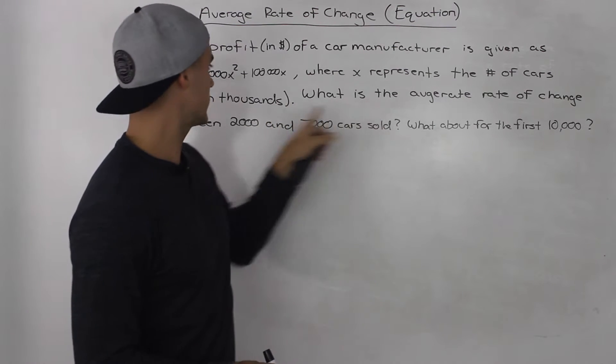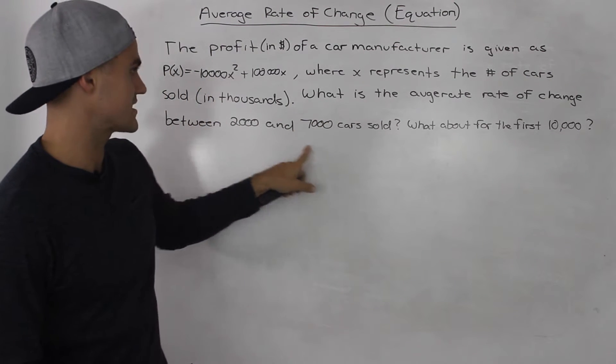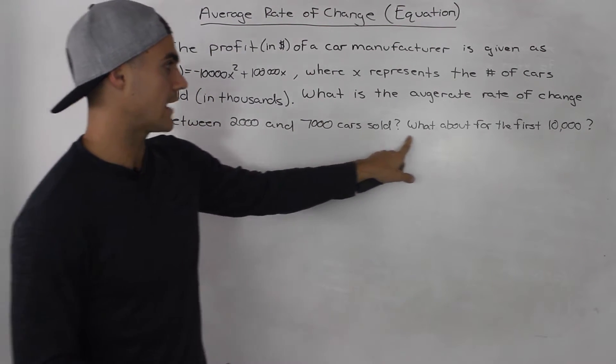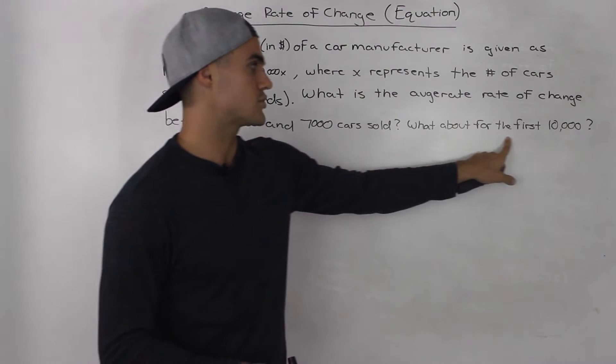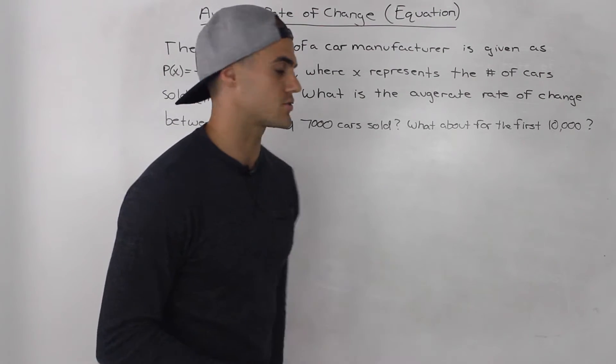What is the average rate of change between 2,000 and 7,000 cars sold? And what is the average rate of change for the first 10,000 cars sold?